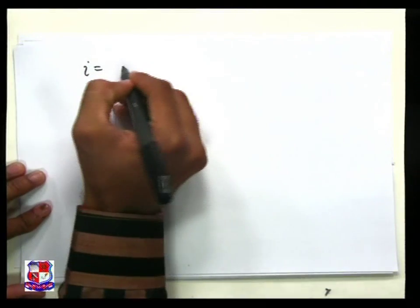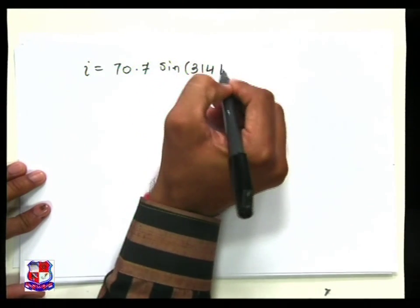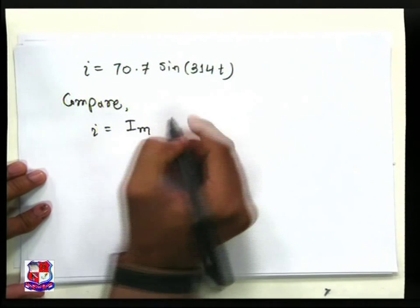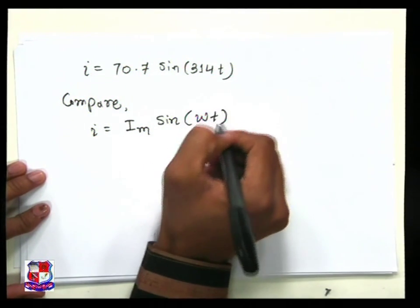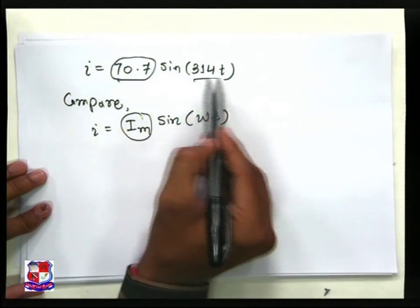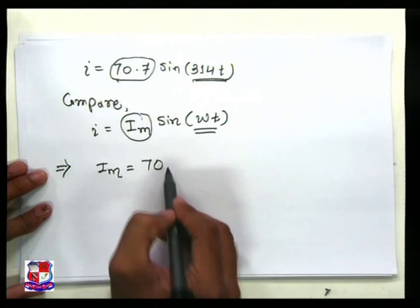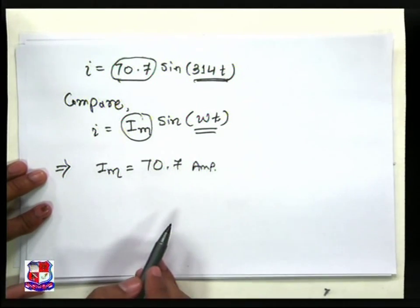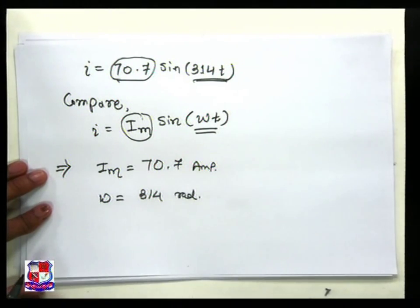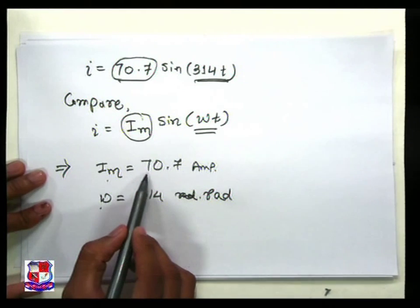We compare the given equation I = 70.7 sin(314t) with the standard form I = I_m sin(ωt). By comparing, we get I_m equal to 70.7 ampere, and ω (angular frequency) equal to 314 radians per second.